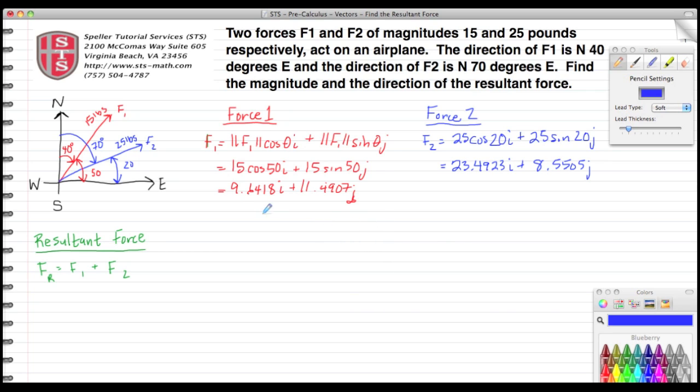Now I have my force 1 and force 2 both in their i and j components. Now we're going to add those two vectors together to get the resultant force. I'll switch to green. We know from previous videos that to add two forces together you add the appropriate components. So here we're going to add the two i components together, and the two i components are going to add up to 33.1341 i. And then we add our j components, and our j components add up to 20.0412 j.